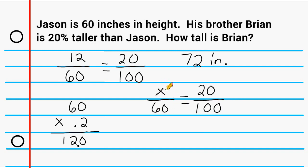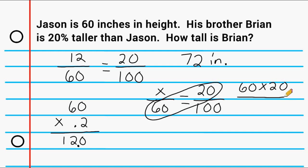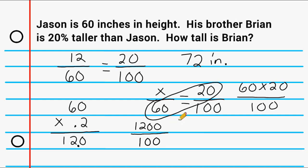We can stick a variable here to solve — it doesn't have to be x, that's just what many people like to use. When you set up a proportion, the first thing you do is cross multiply where you have two values. We don't have two values diagonally, but we have two numbers the other way, so we multiply 60 by 20. Then divide by the number across from your variable — in this case, 100. The product of 60 and 20 is 1,200. Then dividing 1,200 by 100: since both numbers end in zeros, we can cancel out an equal pair of zeros, leaving us with 12 divided by 1, which equals 12.